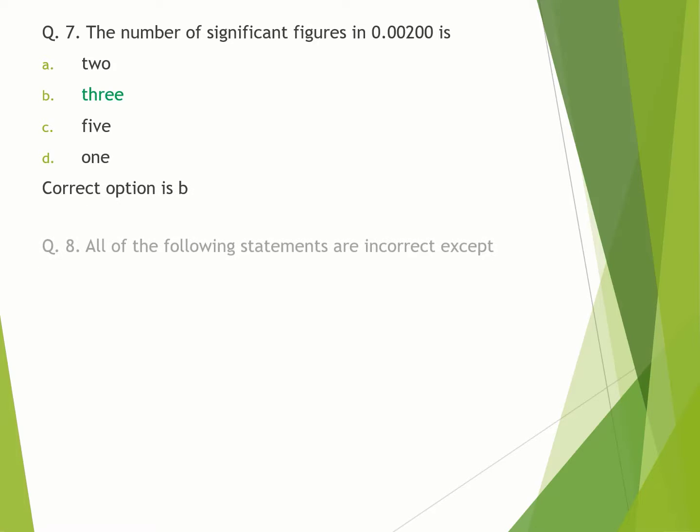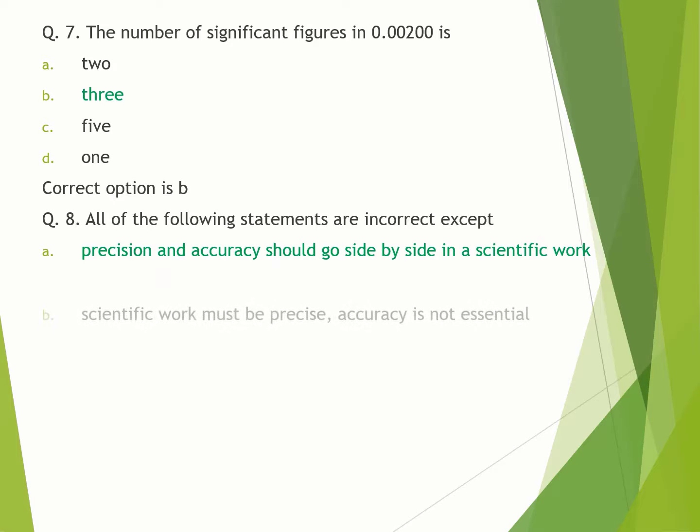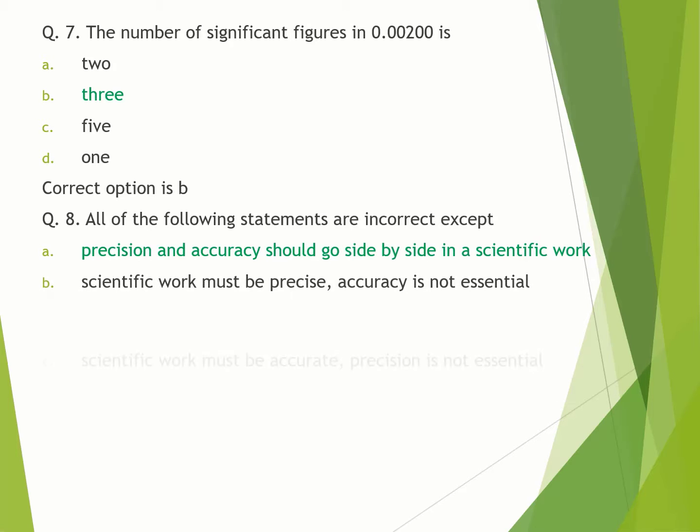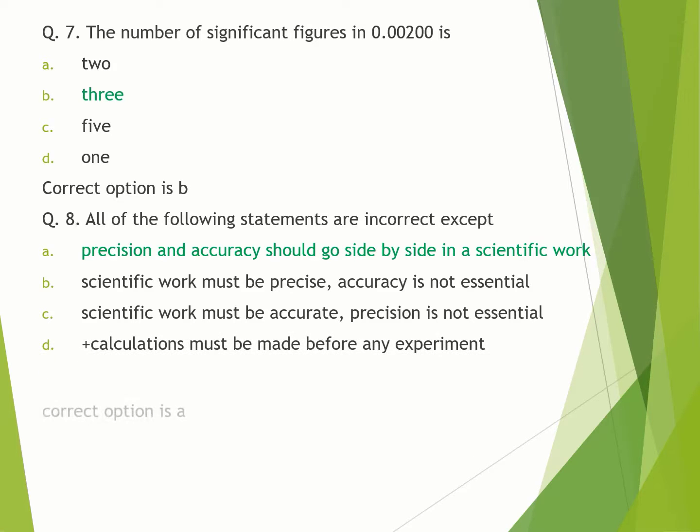Question number 8. All of the following statements are incorrect except: A. Precision and accuracy should go side by side in scientific work. B. Scientific work must be precise, accuracy is not essential. C. Scientific work must be accurate, precision is not essential. D. Calculations must be made before any experiment. Correct option is A.